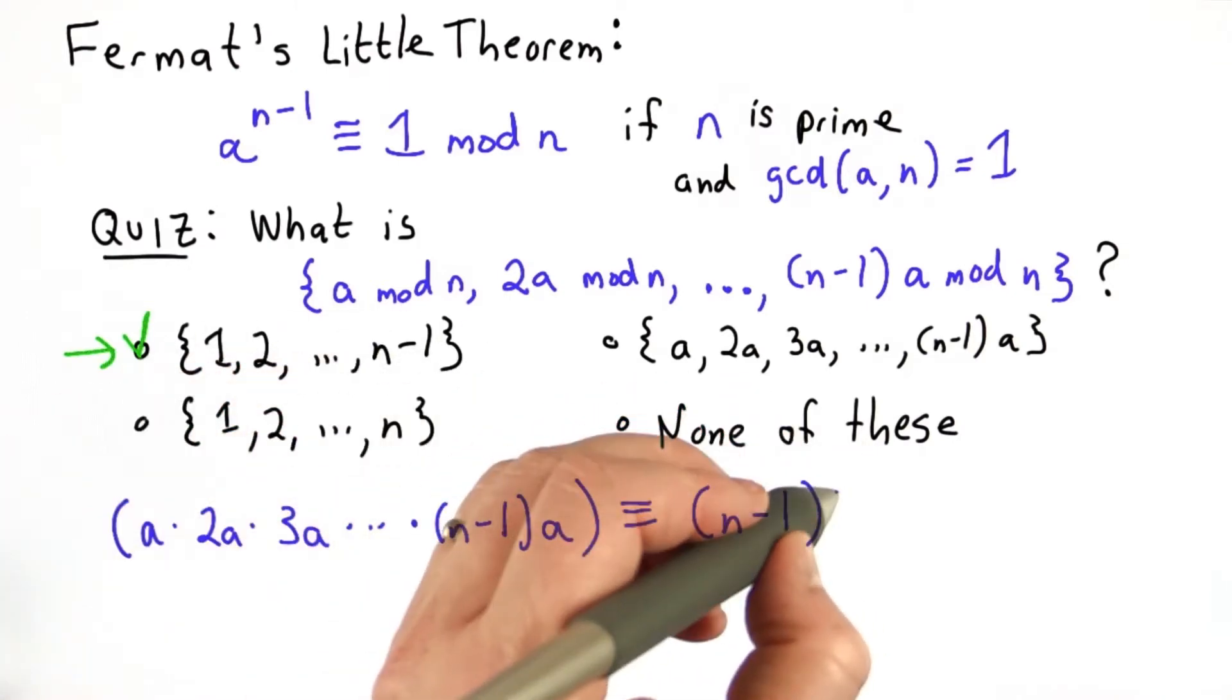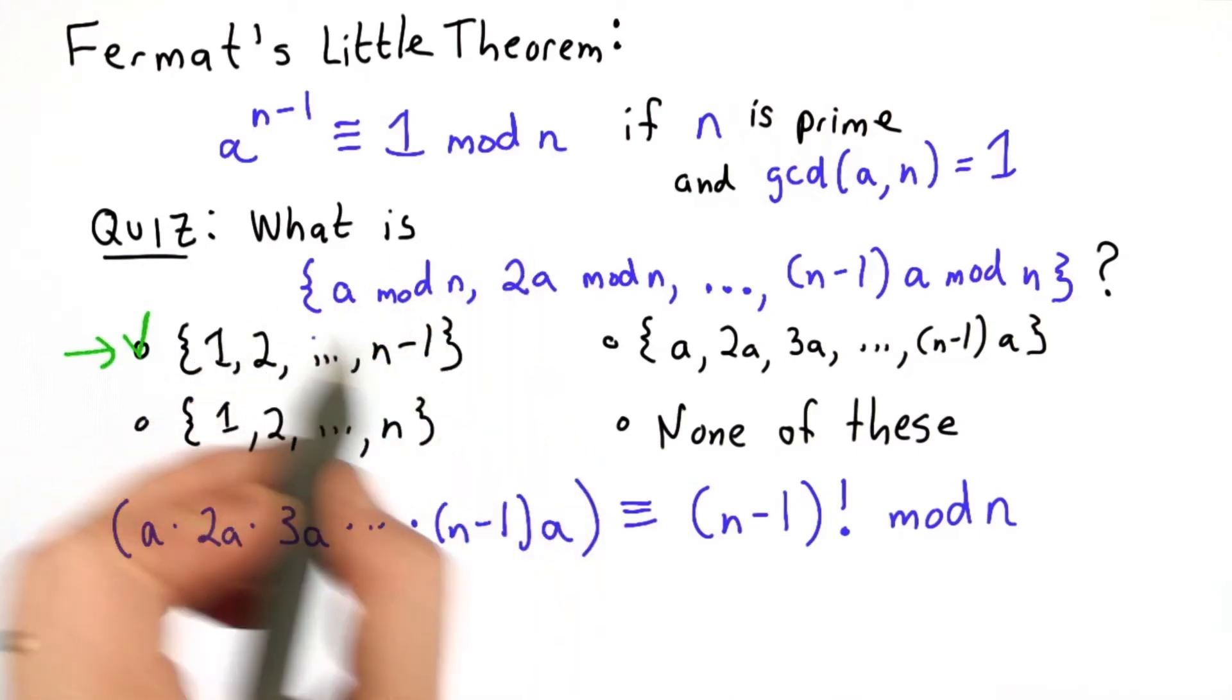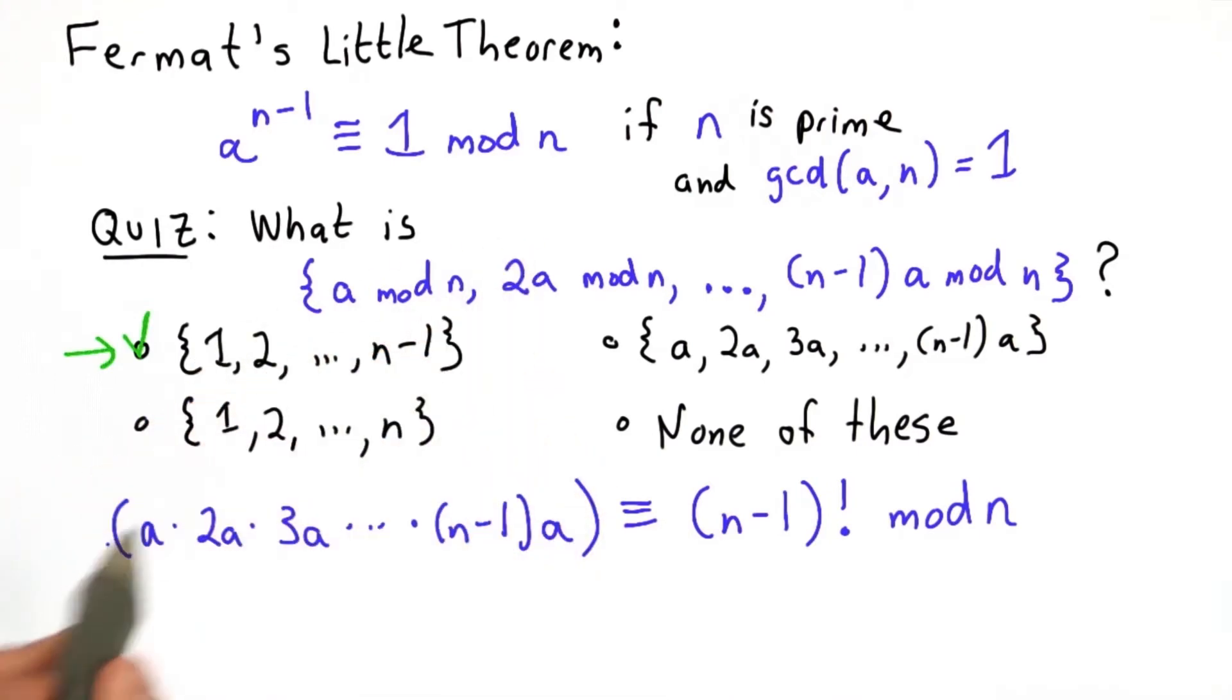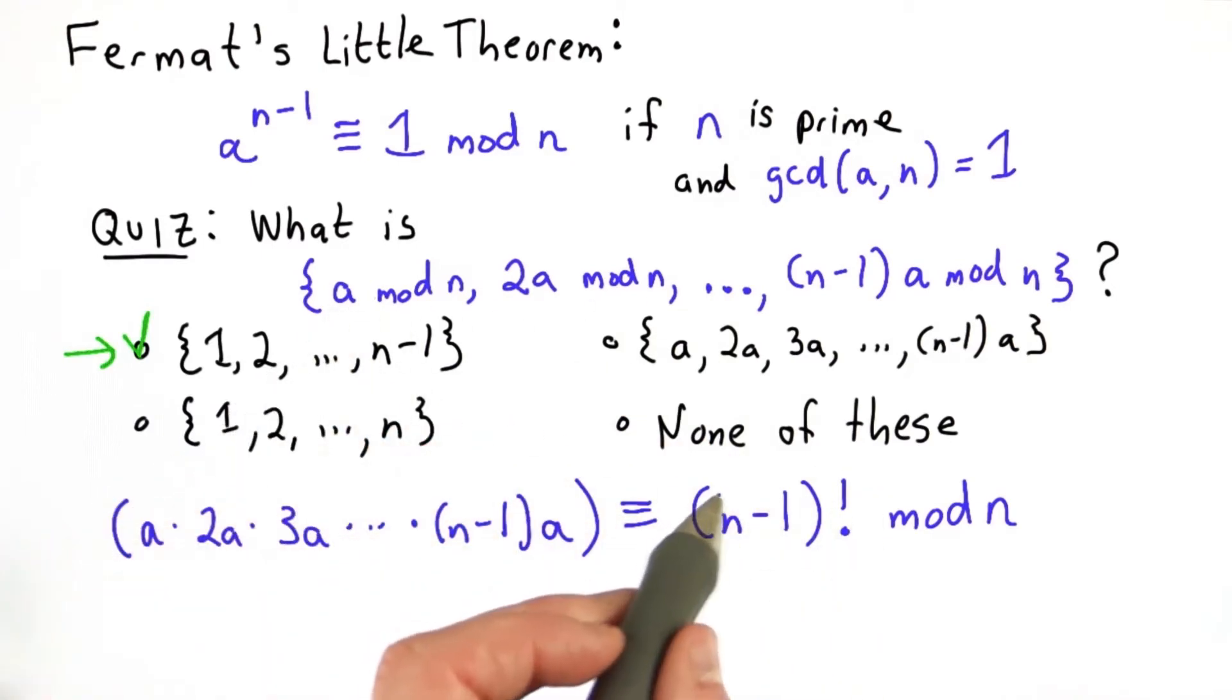And this product is n minus 1 factorial. So since the sets contain the same elements, we know their products also must be equal. So this is the product of the first set. This is the product of the second set. It's n minus 1 factorial because it's multiplying all those numbers up to n minus 1, and those must be equal mod n.